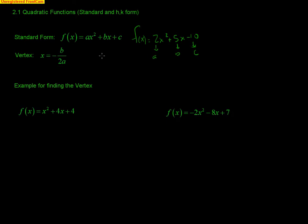One thing we can do is recognize the vertex, or at least the x-coordinate of the vertex, with the formula negative b over 2a.